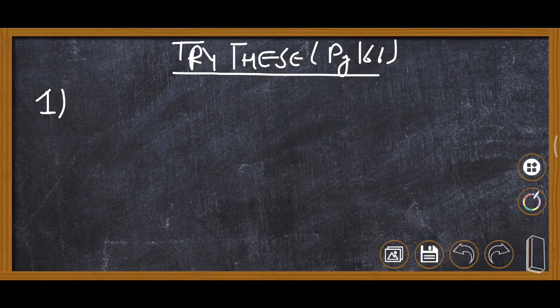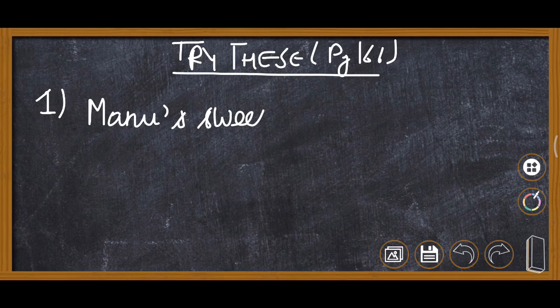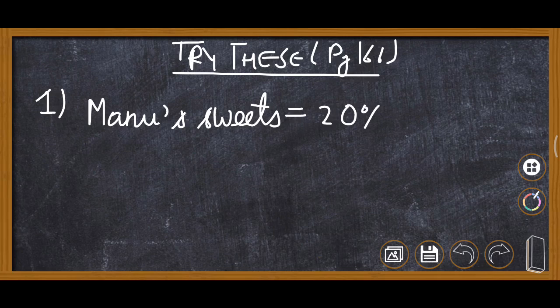Divide 15 sweets between Manu and Sonu so that they will get 20% and 80% of them. So here directly it is written Manu's sweets: it is 20% of total sweets. Total sweets are 15, so 20% of 15 we are required to find for Manu's sweets.